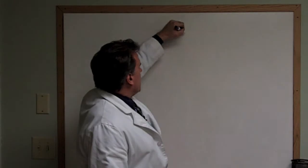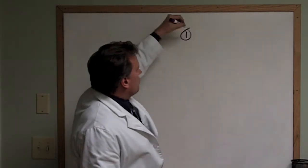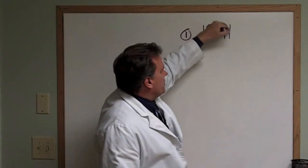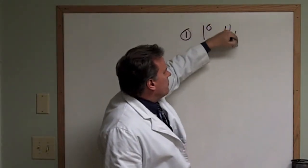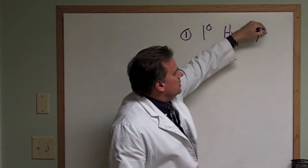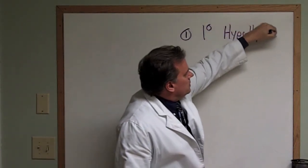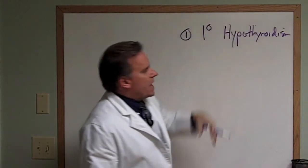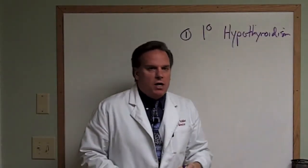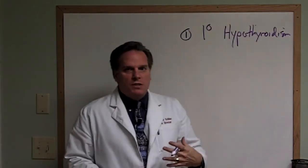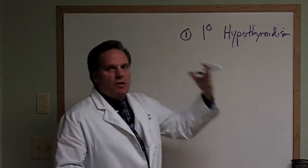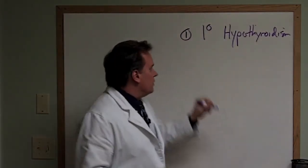The first pattern is primary hypothyroidism — in other words, your thyroid is not working very well. In this pattern, it could actually be Hashimoto's, which is an autoimmune disease. But the idea is that the actual thyroid itself is not working very well.